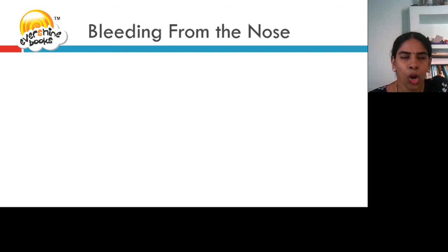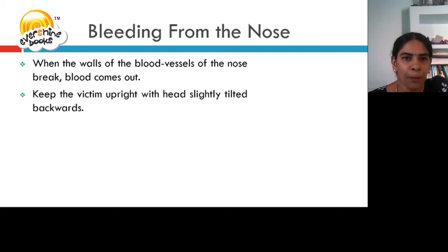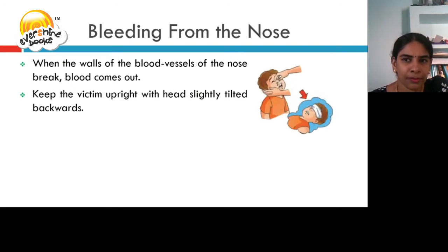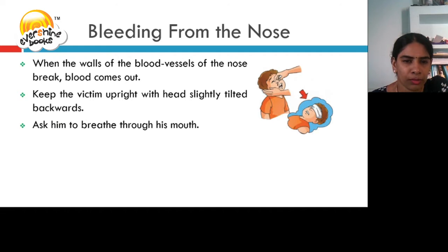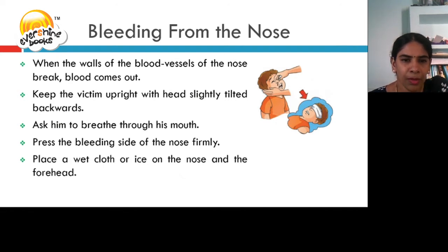Let us see what first aid to be given for bleeding from the nose. When the walls of the blood vessels of the nose break, the blood comes out. Keep the victim upright with head slightly tilted backwards. Ask him to breathe through his mouth. Press the bleeding side of the nose firmly. Place a wet cloth or ice on the nose and the forehead.